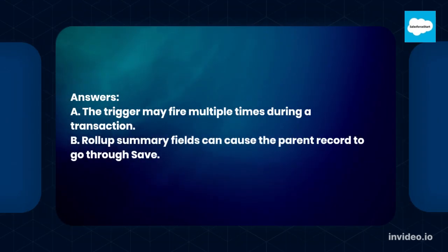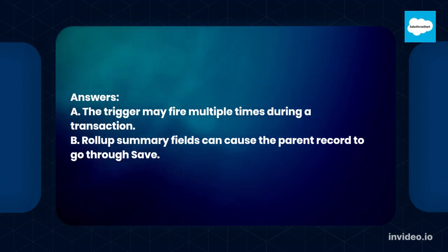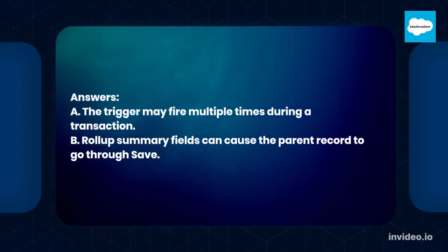Answers: A. The trigger may fire multiple times during a transaction. B. Roll-up summary fields can cause the parent record to go through save.